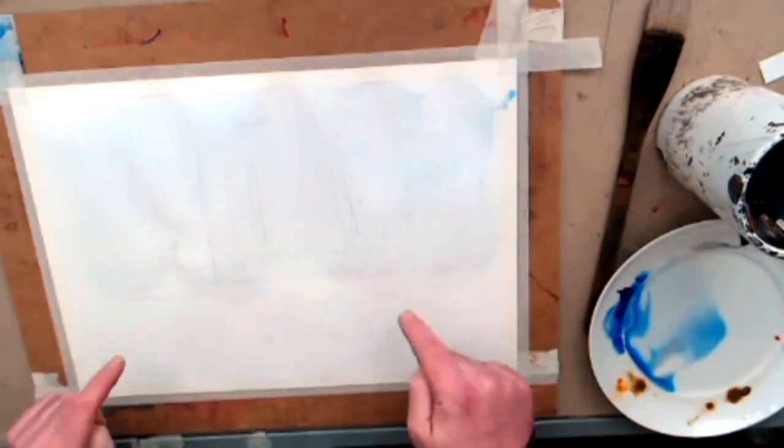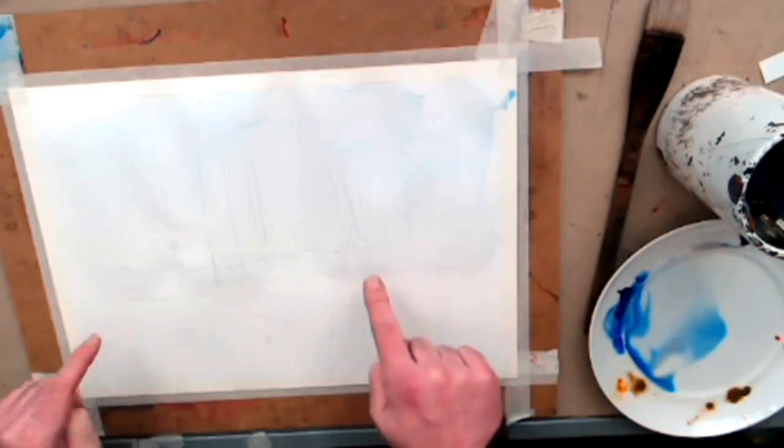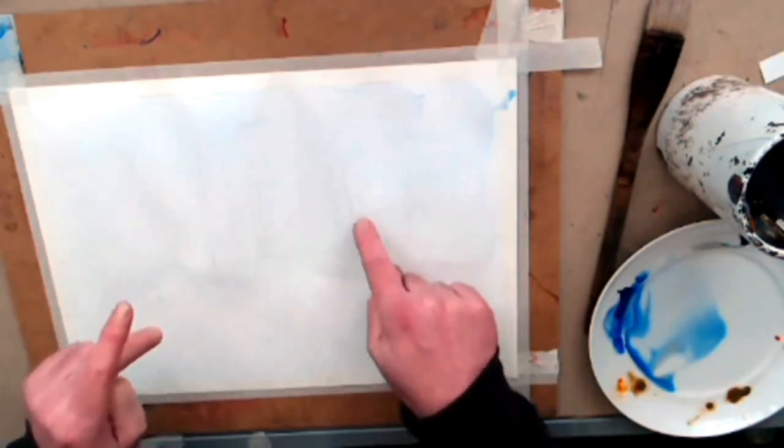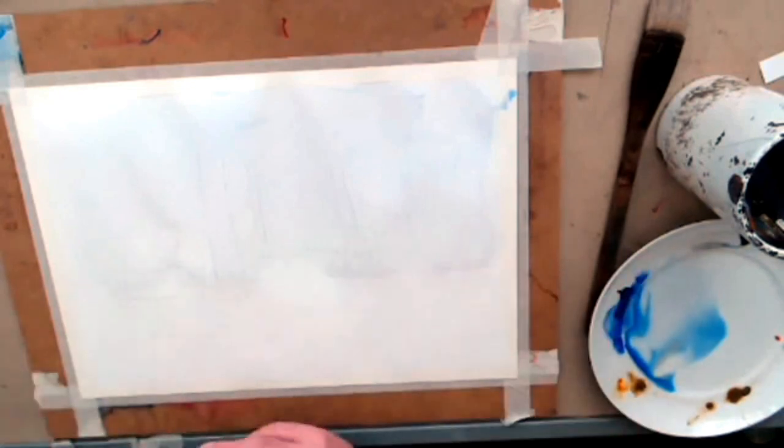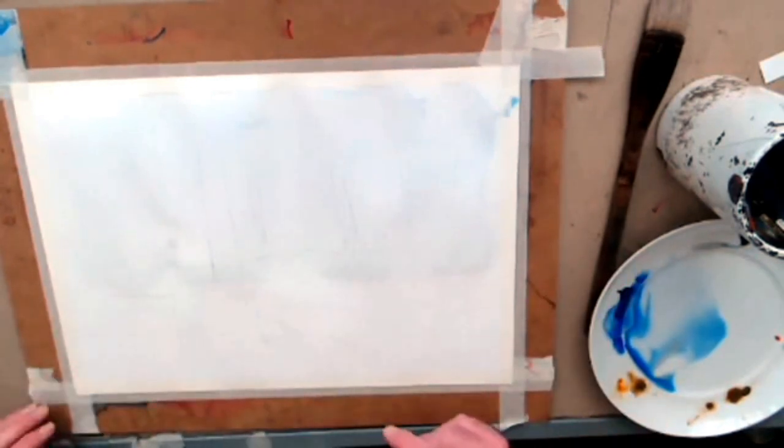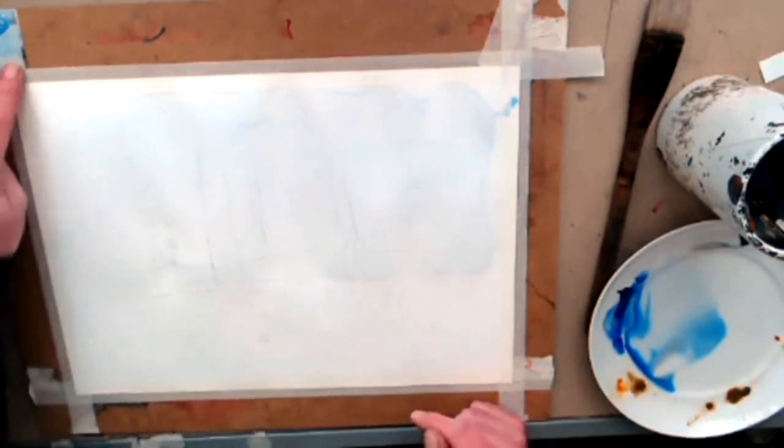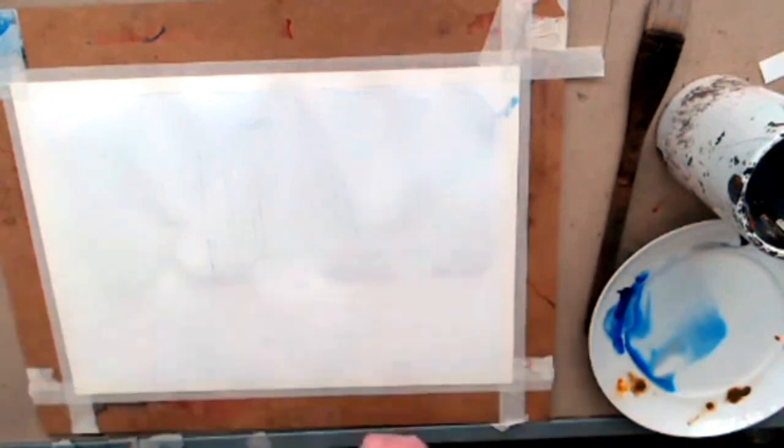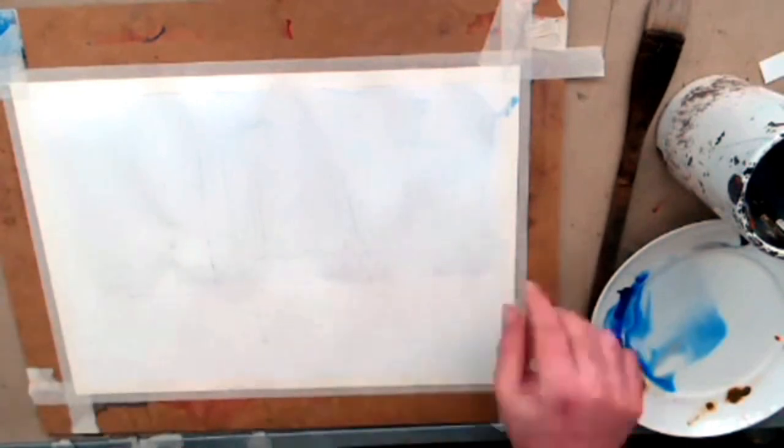Now, any beginners that worry about the paper cockling when it's wet - well, it does cockle. You can see mine is doing there. But basically you just work around it. The more you worry about it, the worse it tends to get. And I don't bother stretching my paper first. I let these washes stretch the paper as I'm working.